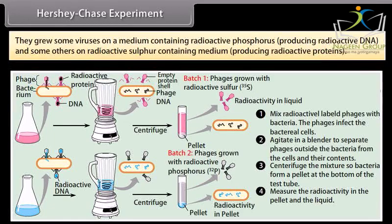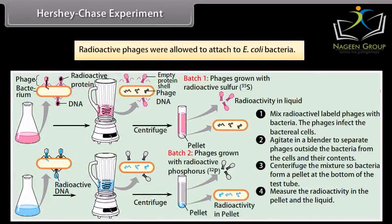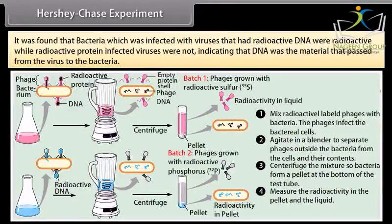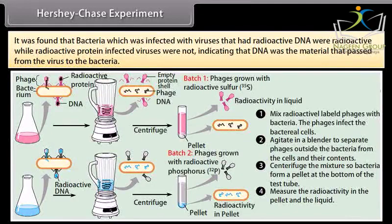They grew some viruses on a medium containing radioactive phosphorus, producing radioactive DNA, and others on a radioactive sulfur-containing medium, producing radioactive proteins. Radioactive phages were allowed to attach to E. coli bacteria. It was found that bacteria infected with viruses that had radioactive DNA were radioactive, while those infected with radioactive protein viruses were not, indicating that DNA was the material that passed from the virus to the bacteria.